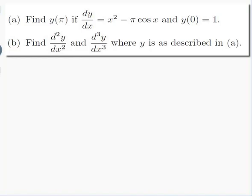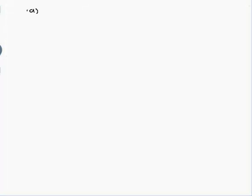Part a: Find y of π if dy/dx equals x squared minus π cos x and y(0) equals 1. Part b: Find d²y/dx² and d³y/dx³ where y is as described in part a. Okay, well let's see. Part a: dy/dx is x squared minus π cos x.